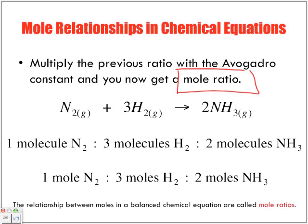The mole ratio is where we use these coefficients and treat it as what is the mole ratio between this molecule with that and our final. The relationship between the moles in a balanced chemical equation are called the mole ratio. We looked at it originally as one molecule to three molecules to two molecules. But treat it as one mole to three moles to two moles.